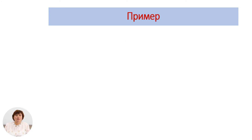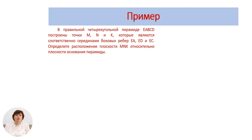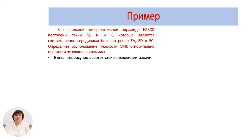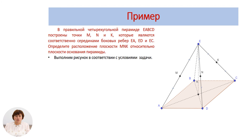Применим это для решения следующей задачи. В правильной четырёхугольной пирамиде EABCD построены точки M, N и K, которые являются серединами боковых рёбер EA, ED и EC соответственно. Определите расположение плоскости MNK относительно плоскости основания пирамиды. Выполним рисунок в соответствии с условиями задачи – все точки проставлены.